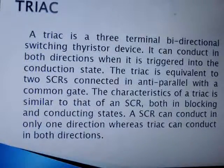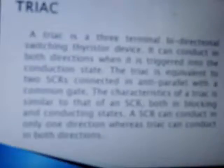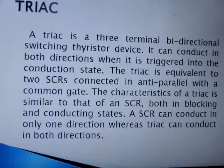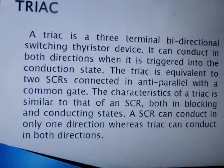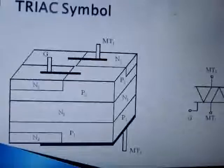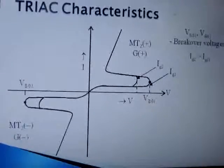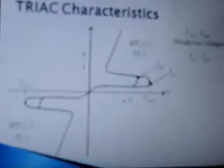A TRIAC is also a thyristor family device. It can be considered as two SCRs connected in anti-parallel with their gates combined, so it can allow current to flow in both directions. An SCR can only conduct in one direction, from anode to cathode. This is the symbol and block diagram of a TRIAC. Its VI characteristics in the first quadrant and third quadrant remain the same.